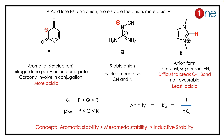Therefore, the acidity order is P > Q > R, and the pKa order is the reverse: pKa(P) < pKa(Q) < pKa(R). The key concept to learn here is that aromatic stabilization is higher than mesomeric stabilization, which is higher than inductive stabilization.